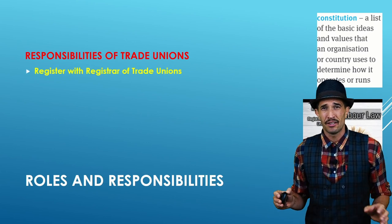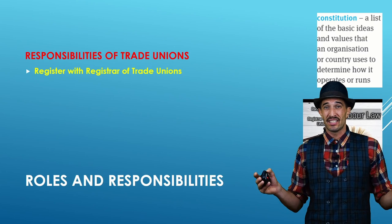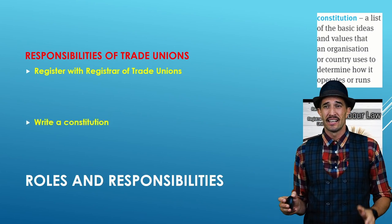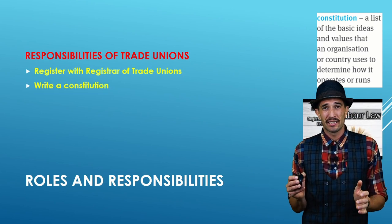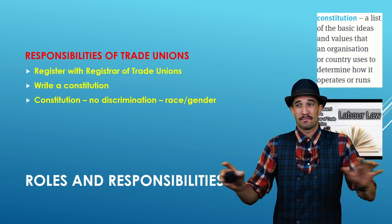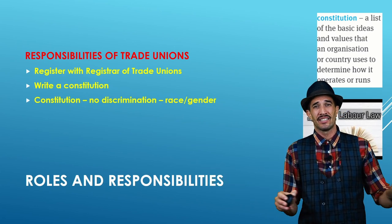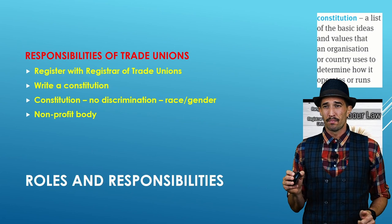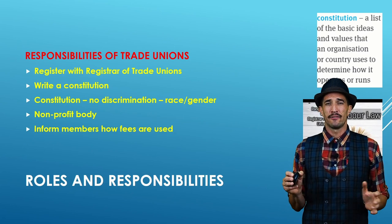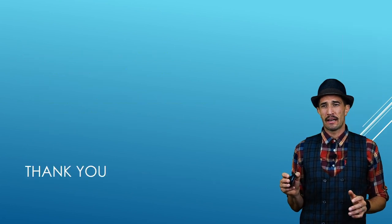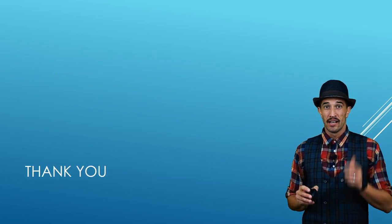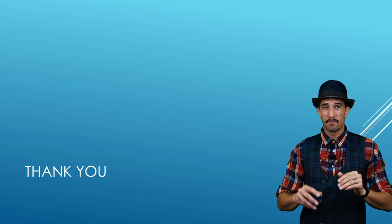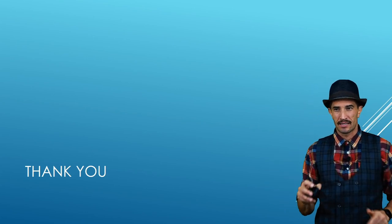Trade unions must meet certain requirements before they can be recognized. They need to be registered — like a business — with the Registrar of Trade Unions. They must write a constitution stating there must be no discrimination based on gender, race, or anything else. They are also a non-profit body and must inform members on how money is used. Make sure you watch the next video where we'll dive deeper into trade unions.